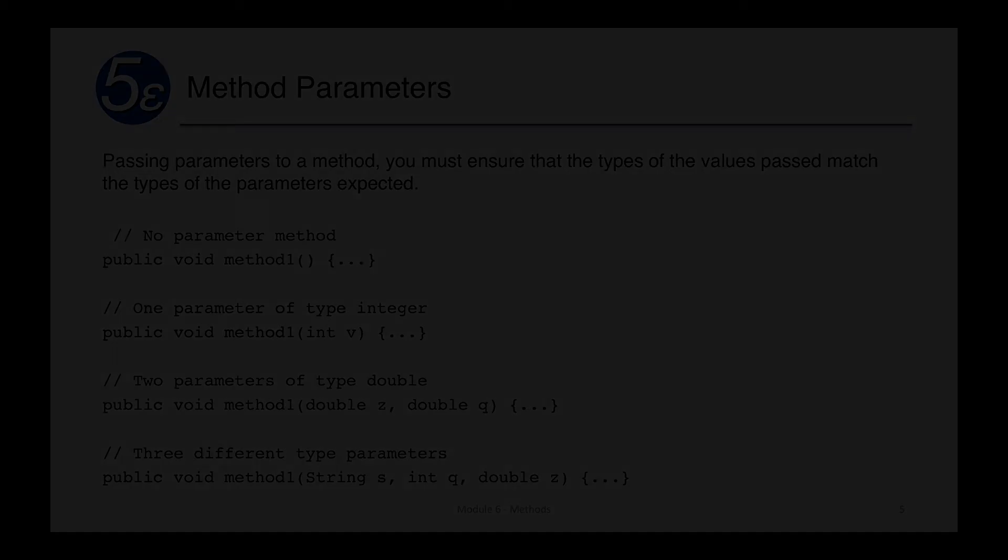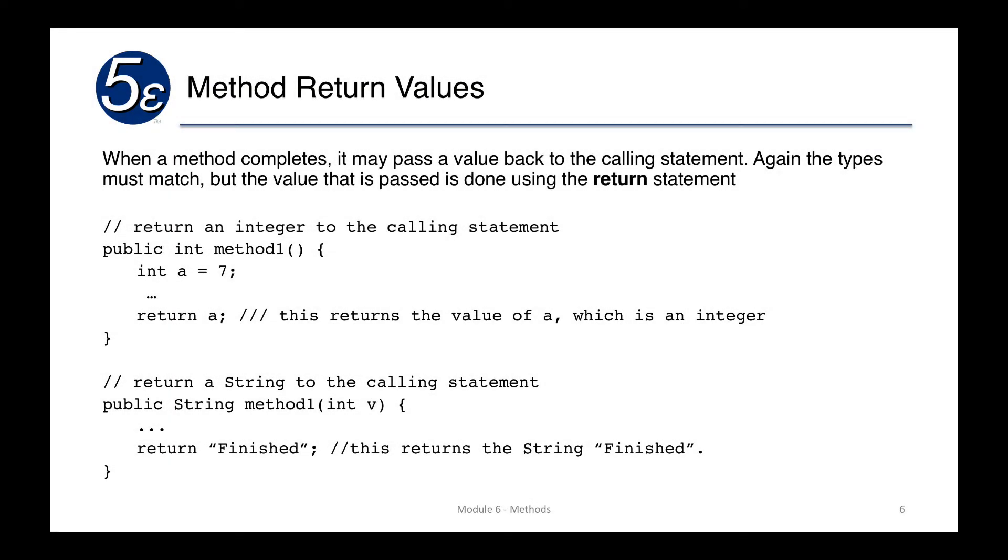In terms of return values, when a method completes, when the code processes itself into method one, say here public int, this takes no parameter so nothing is coming in. We define an integer here, int a equals seven. This is like our normal main method. We might do some work with it and then return a. The value that is at a will be returned back out to the calling method. Wherever it was called, or whatever line called method one is what will return back the value that's in a.